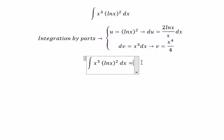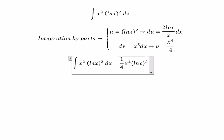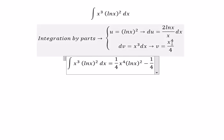So we have u multiplied with v. So you got 1 over 4, x to the power of 4, ln x to the power of 2. We have a negative in here. x to the power of 4 multiply with this one.